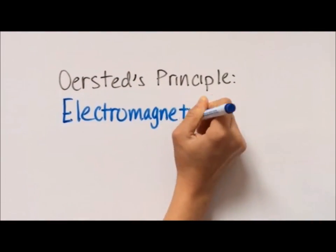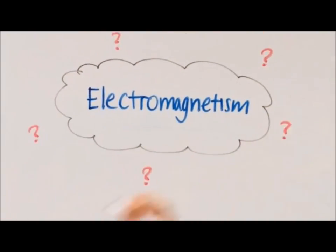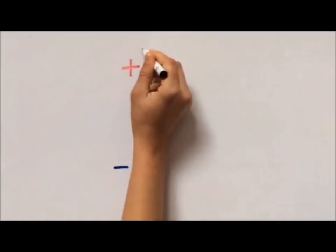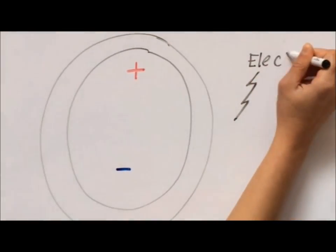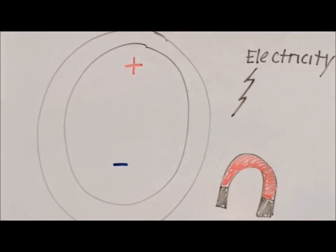Today I will be discussing Orsted's principle in the discovery of electromagnetism. What is electromagnetism? Electromagnetism is the science of charge and of the forces and fields associated with it. Electricity and magnetism are two parts of it.